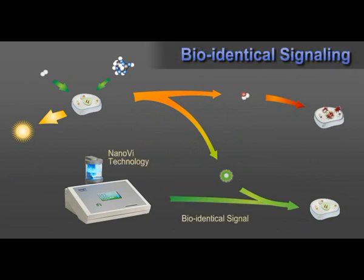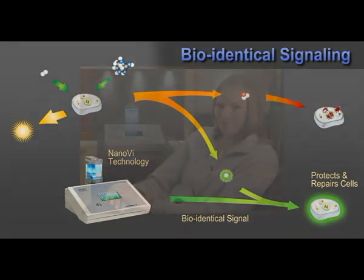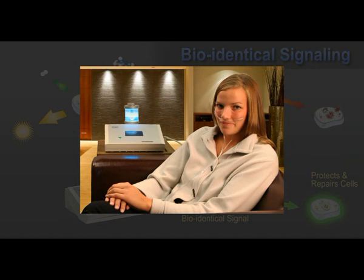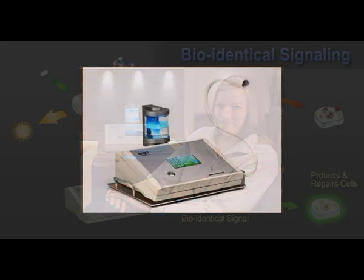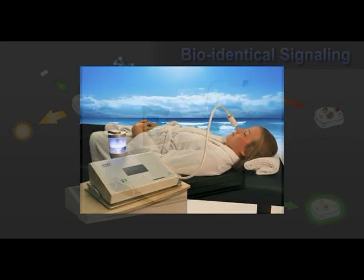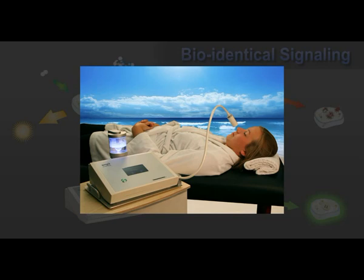Bioidentical signaling uses the science of cell signaling in a drug-free approach to improving cellular activity. The technology emits precisely the same signal as the ROS that act as second messengers. This bioidentical signal is transmitted from the Nano-V device to the user through a humidified air stream inhaled through a nasal cannula or flex arm attachment. The signal is further transmitted to the cells in the body through the mucus membrane in the nose, mouth, and lungs. Like many other signals, such as electricity or ultrasound, the bioidentical signal immediately cascades throughout the entire body.